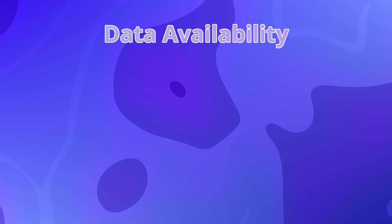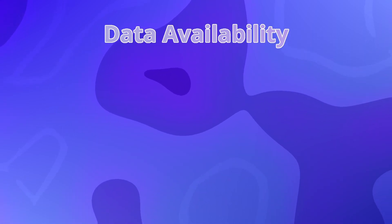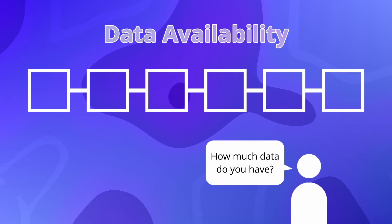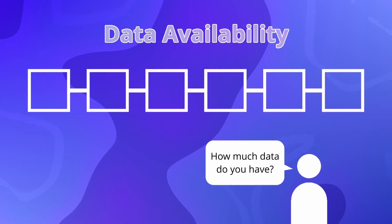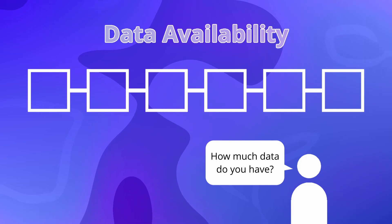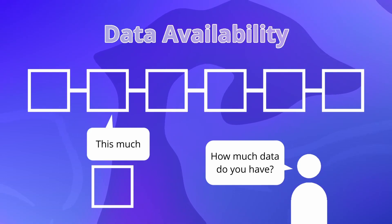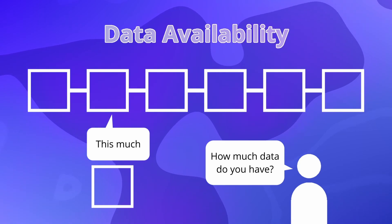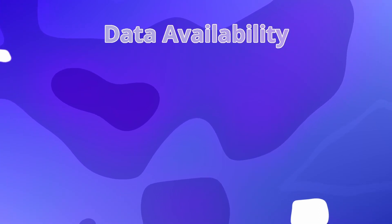At its core, it's extremely simple — as the name suggests, how much data does a chain make available for users to download? For the vast majority of cryptocurrencies, it is extremely simple. The amount of data that is made available is simply the block size, as all nodes in the network will download blocks, so whatever data you can fit into a block is the data that was made available for anyone to download.